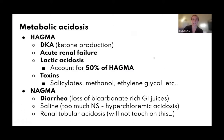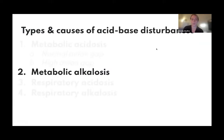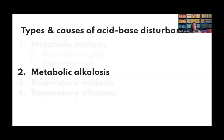Metabolic alkalosis occurs when there's too much bicarb, either from decreased hydrogen ions or increased bicarb concentration. For severe metabolic acidosis, sodium bicarb is used in the hospital — studies show it helps with outcomes in AKI. Also, if pH is below 7.15, vasopressors like levophed won't work as well, so sodium bicarb helps the vasopressors function. It's also given for rhabdomyolysis causing AKI. Sodium bicarb is helpful but not a cure-all and has adverse effects.